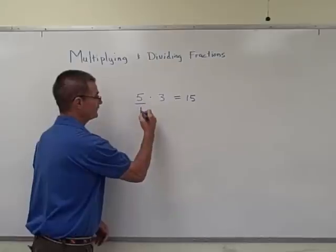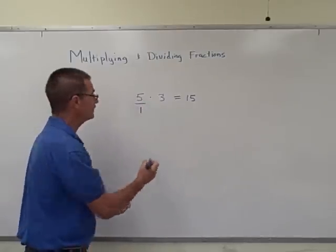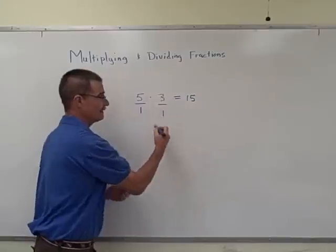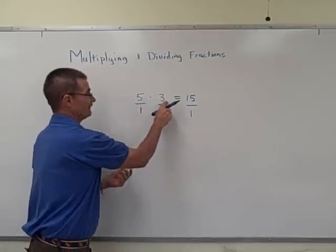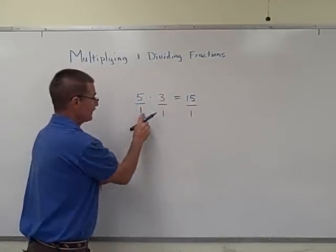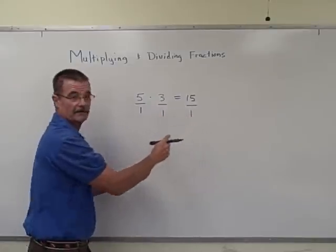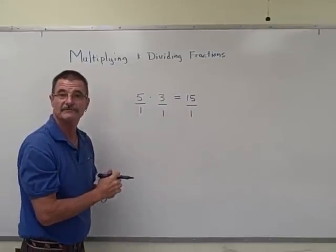Every number is a fraction. This is really 5 over 1, this is really 3 over 1, and this is really 15 over 1. So you can see that you go 5 times 3 is 15, and we really go 1 times 1 is 1. And you all know that 3 times 5 is 15.